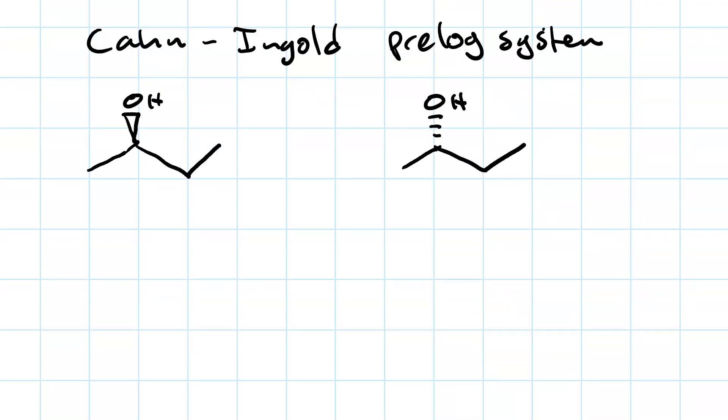In fact, according to the Cahn-Ingold-Prelog system, the molecule on the left is R-butane-2-ol, and the molecule on the right is S-butane-2-ol.